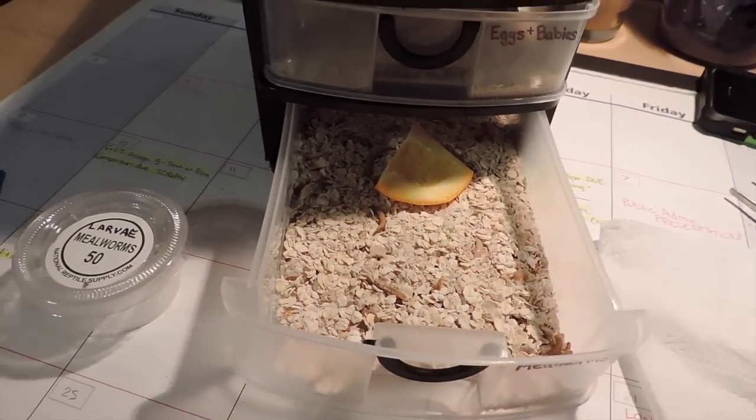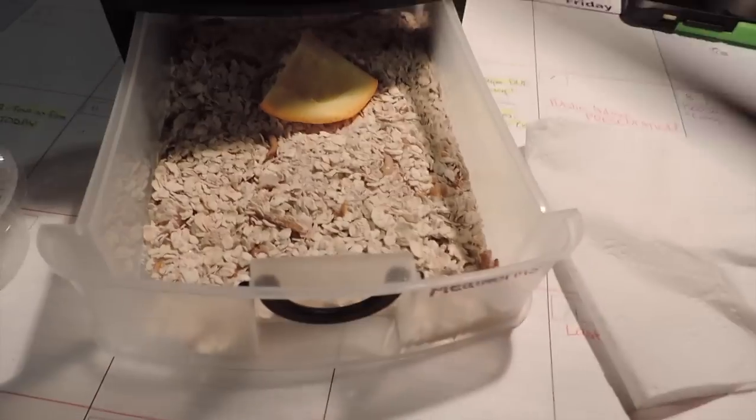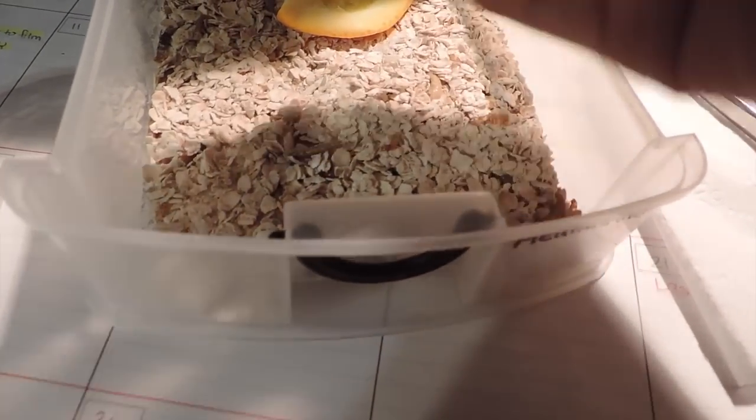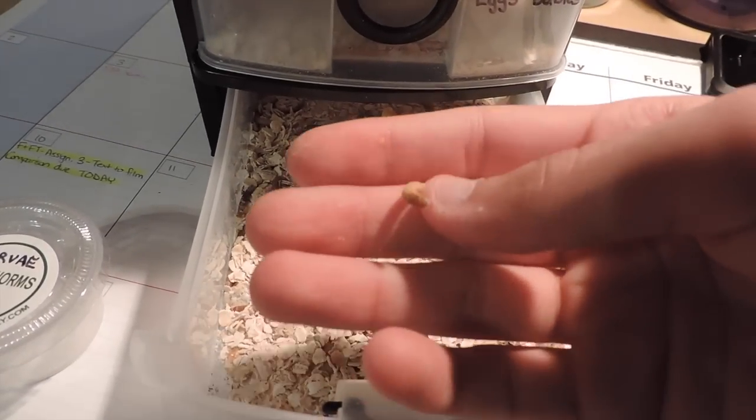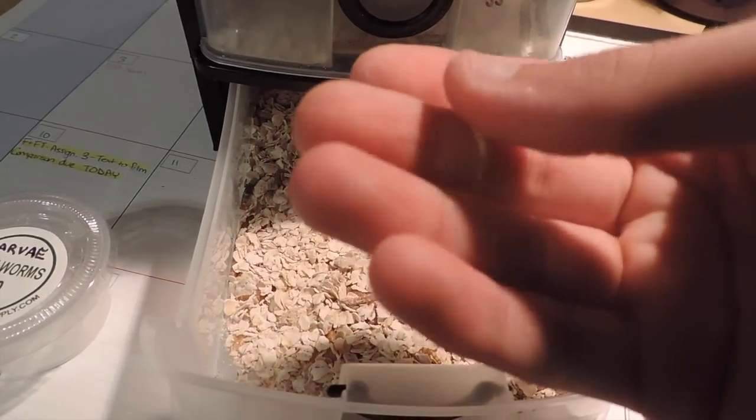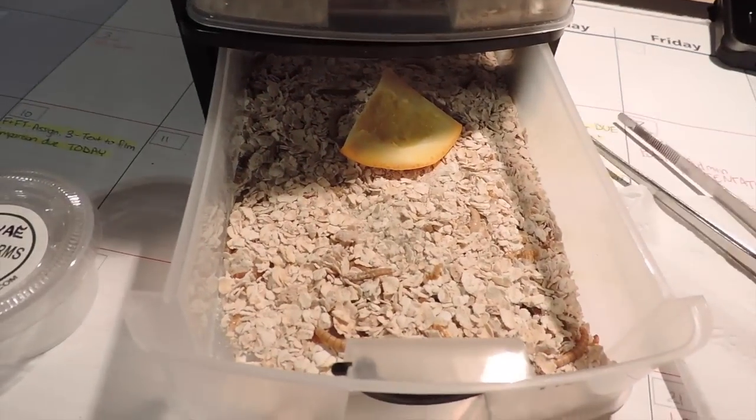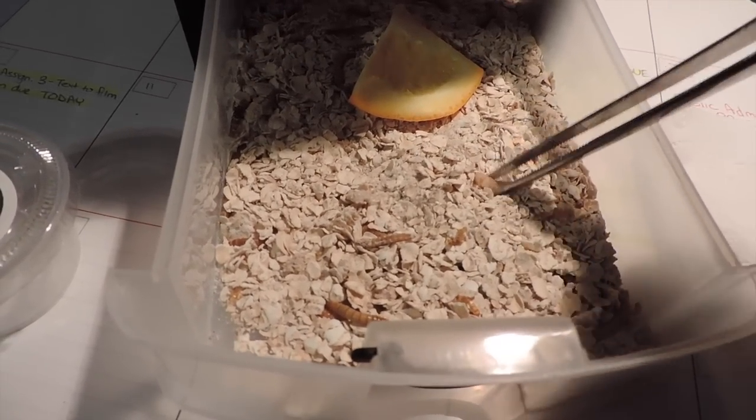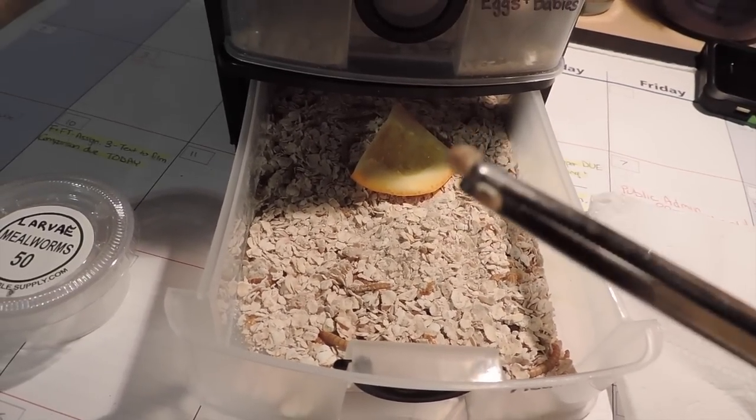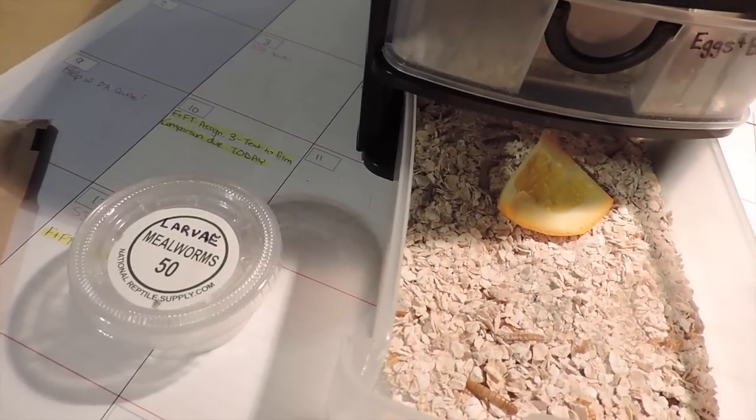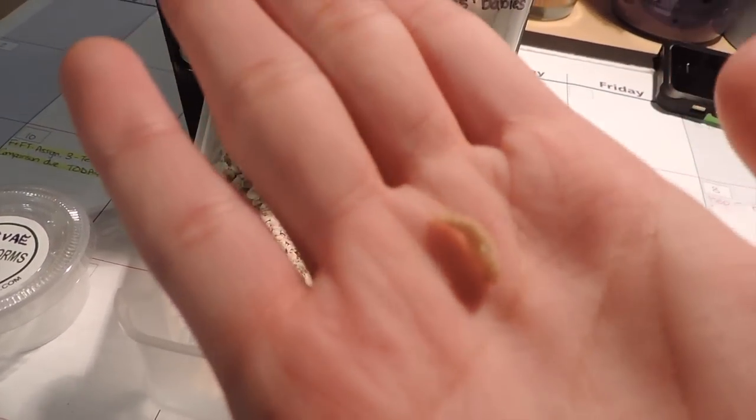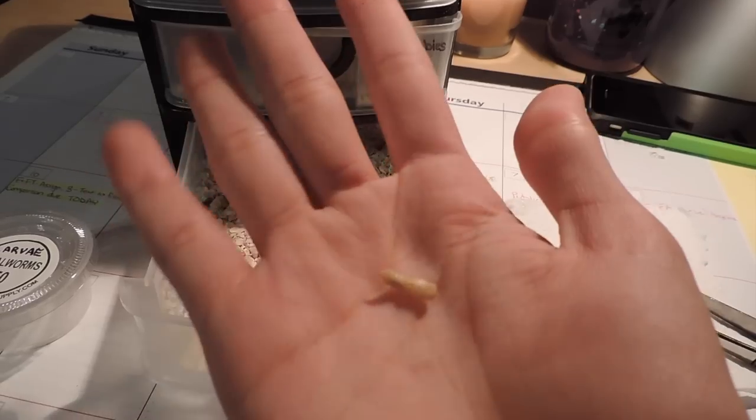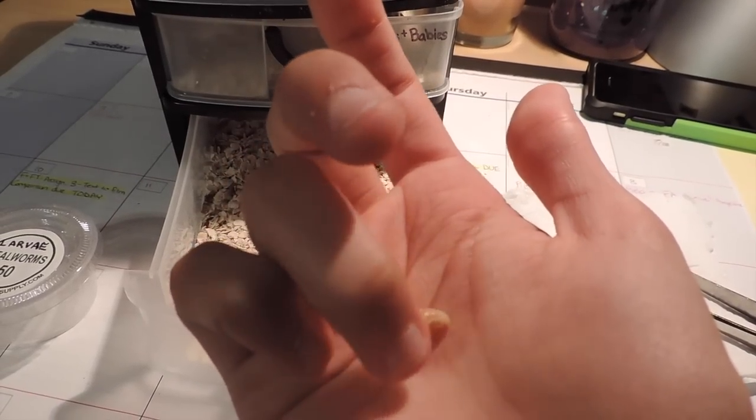The life cycle of a mealworm: basically they'll go from these mealworms that you buy in the pet store, and from that stage they'll develop into larva. Larva look like this. I'm squishing him. Larva look like this. They turn kind of whitish. They stay in the larva stage for about a week or two.